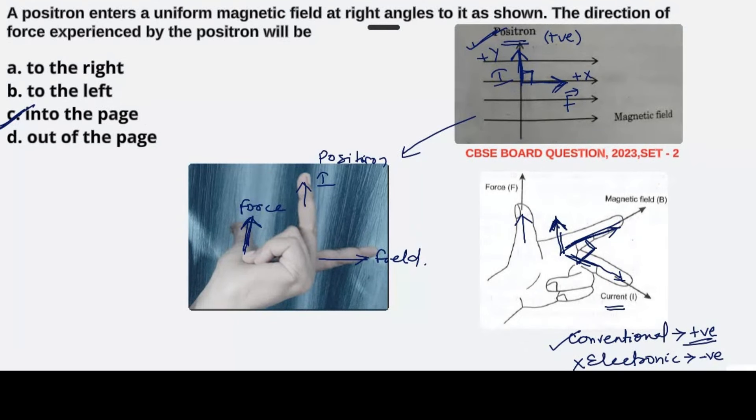Just keep in mind that we have to take the direction of positive or conventional current as the direction of current, and not the direction of electrons. That means if an electron would be moving in downward direction, we will still point our middle finger upwards because that is the direction of conventional current, opposite to the direction in which the electrons are moving or electronic current is flowing.